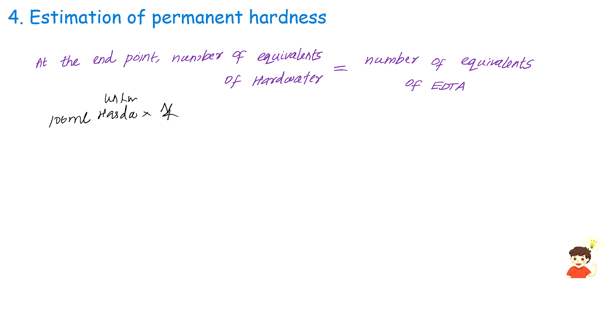That is equal to 12ml times 0.24 normal EDTA. N4 value is 12 times 0.24 divided by 100, which equals around 0.0288 normal. Now, permanent hardness...